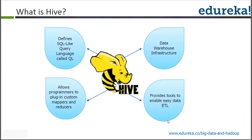Hive allows you to run ETL processes — all select queries get converted into MapReduce, so it becomes an ETL process. It also allows programmers to plug in custom methods through UDF functionality — user-defined functions. Since select queries involve functions like count and sum, you can write and run your own custom UDFs as well.